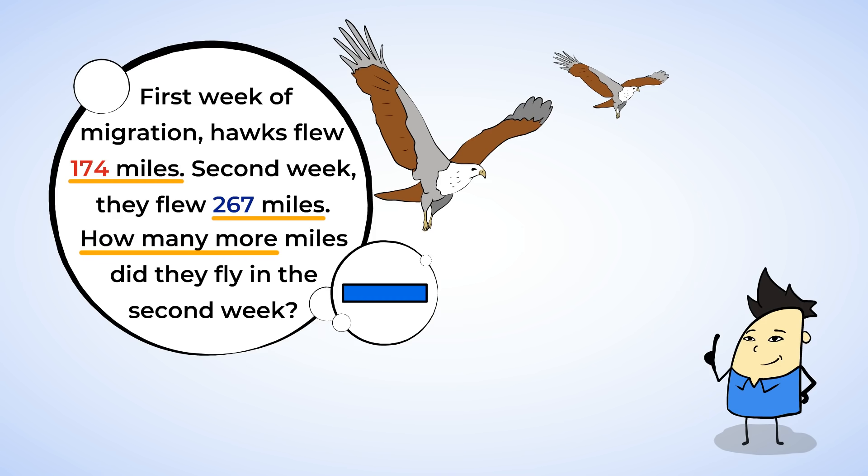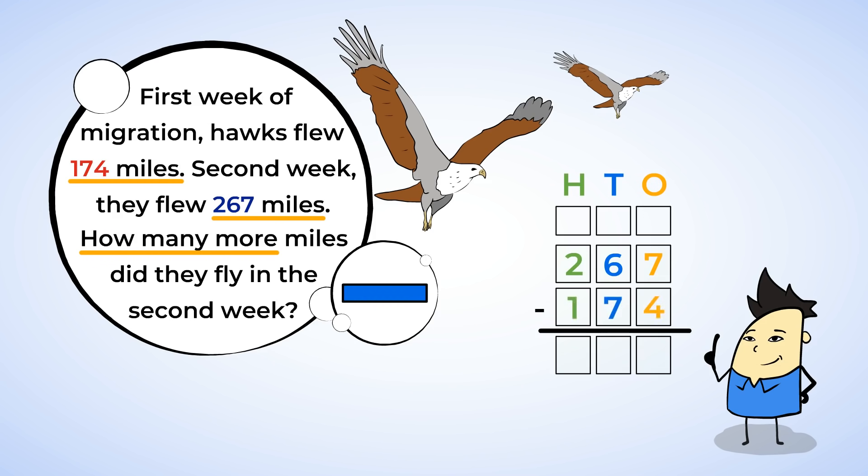We want to know how many more miles were flown in the second week. So, we start with that number, 267, and subtract the number of miles in the first week, 174. Now each place is aligned. Let's use our base 10 blocks for this one too. It'll help us see better what's happening when we subtract.